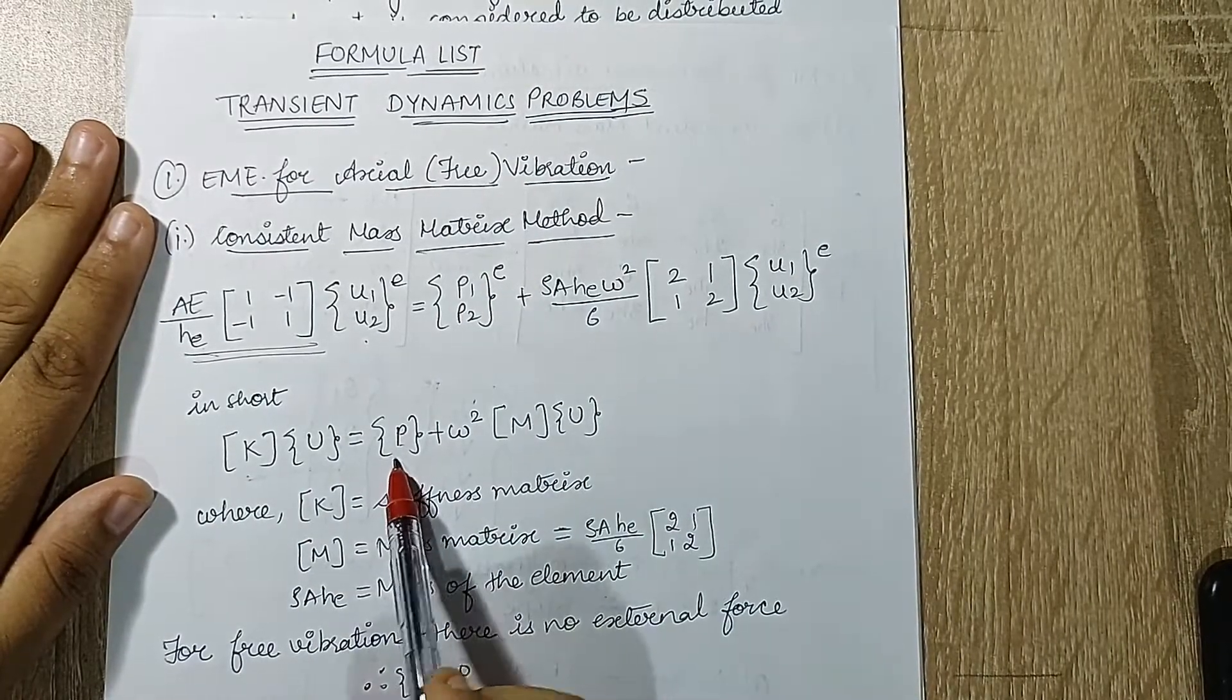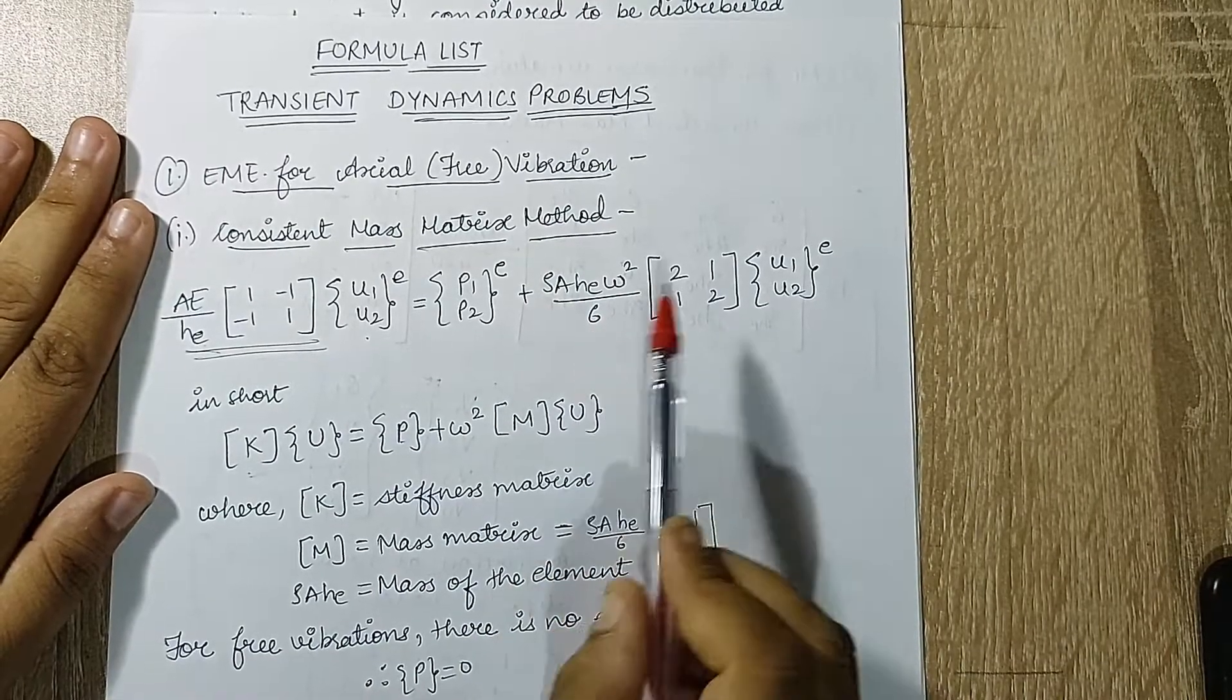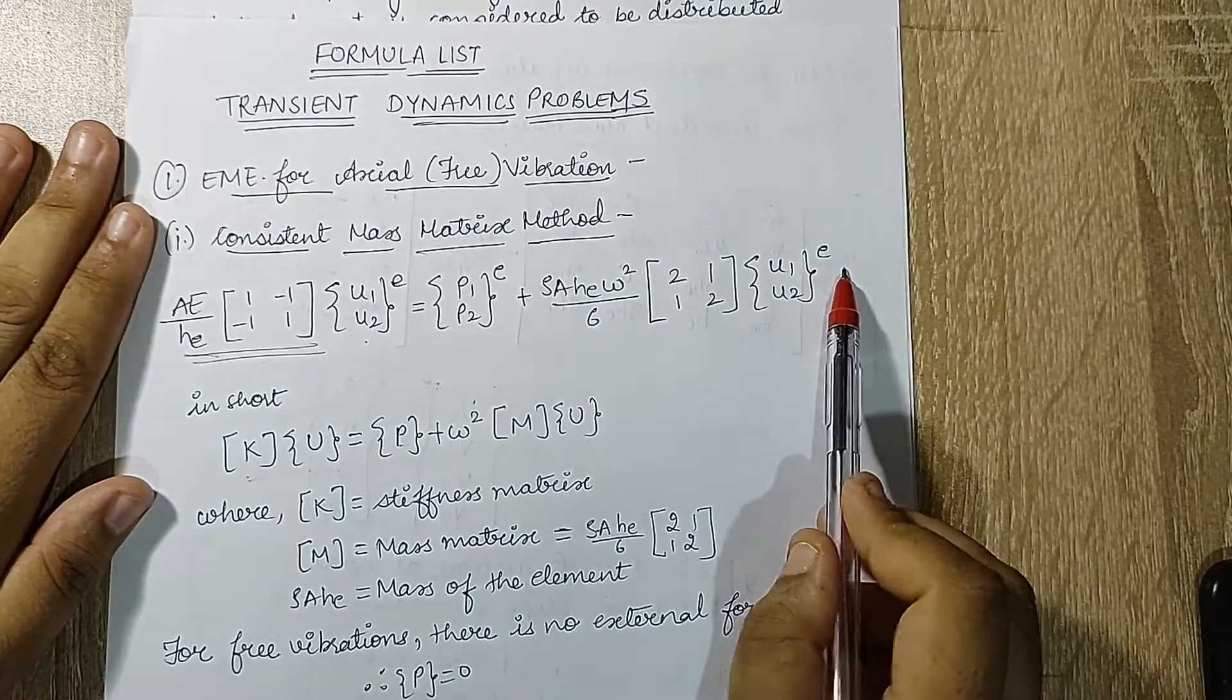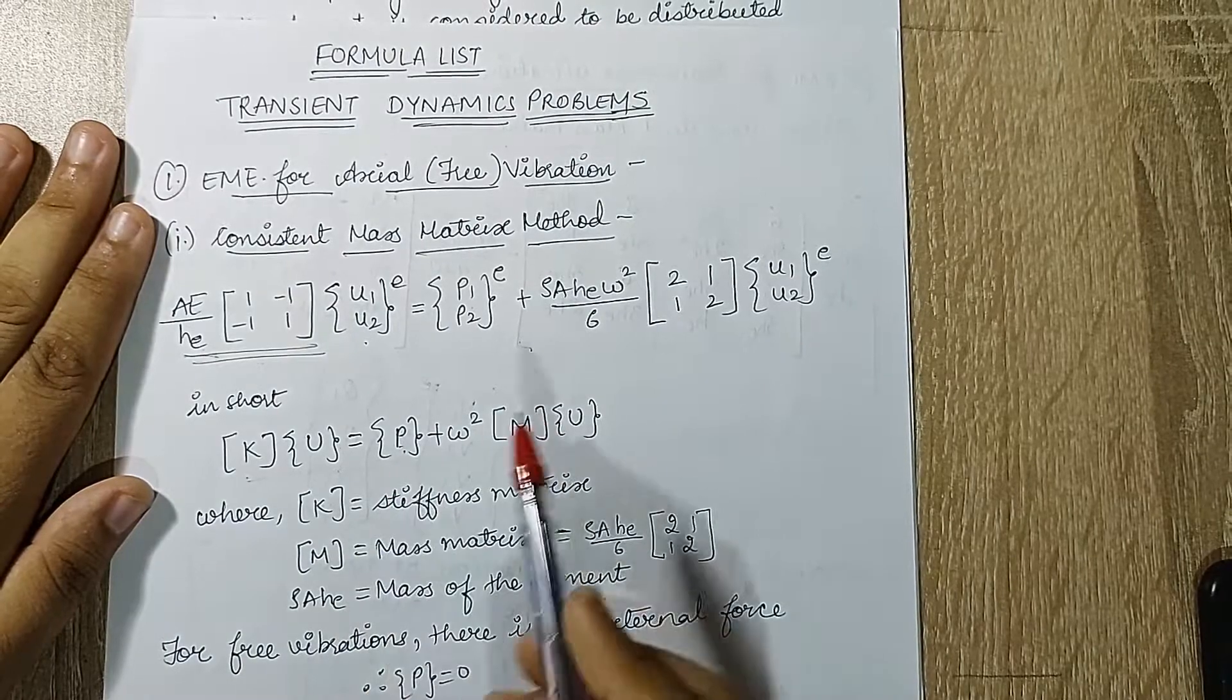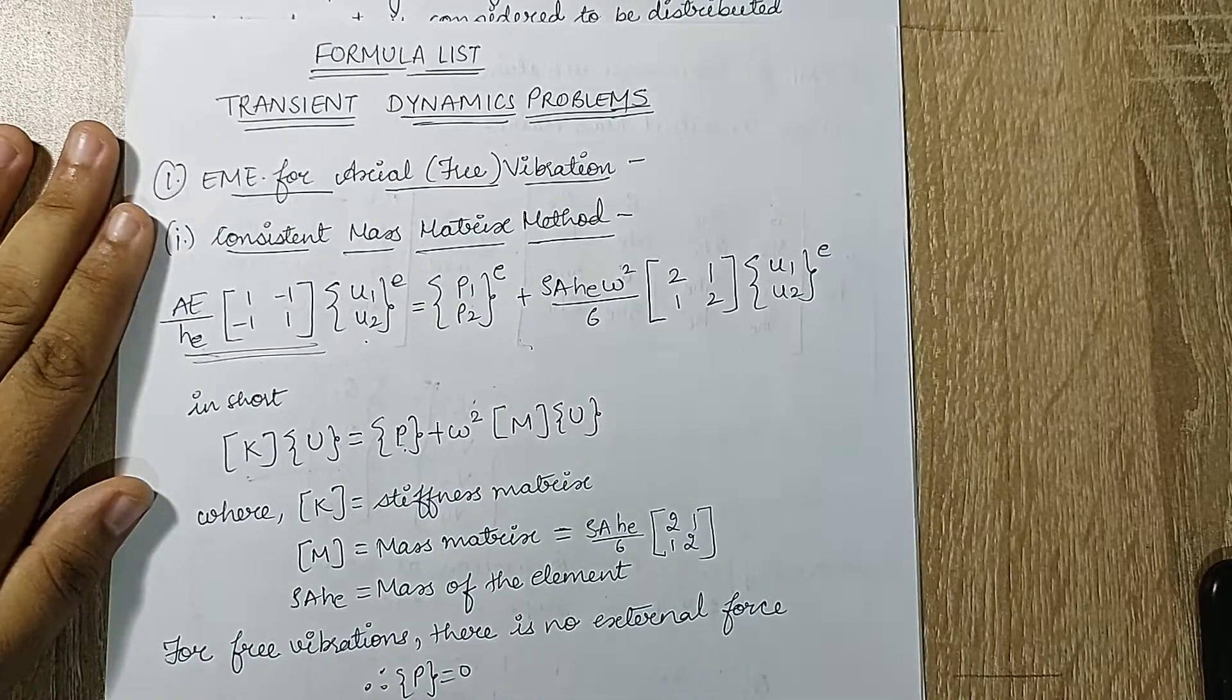On the right hand side you will have lower matrix P plus rho A HE omega square upon 6 [2, 1; 1, 2] {u1, u2} raised to E.